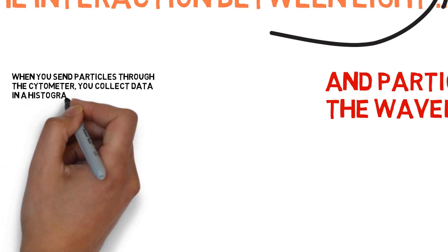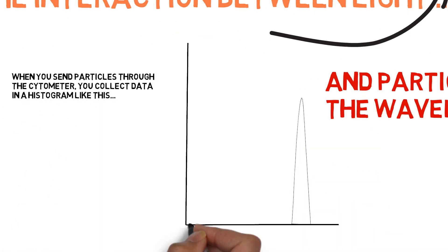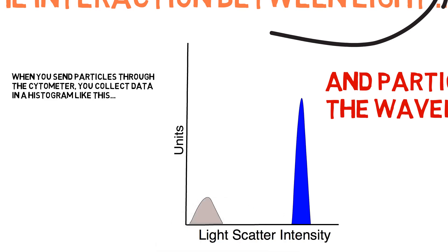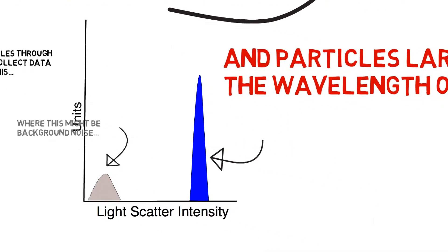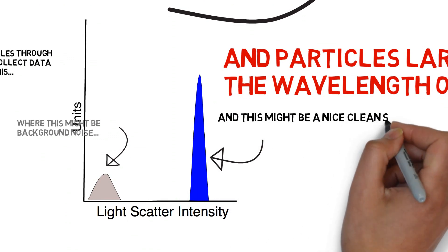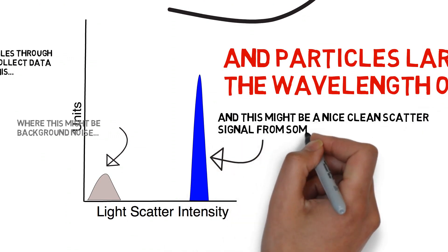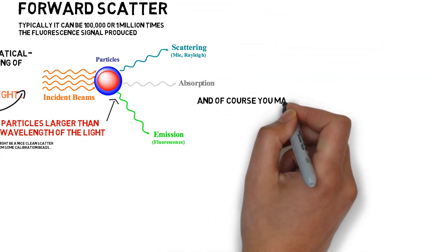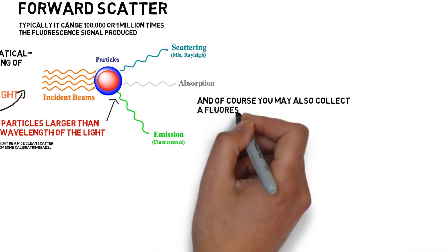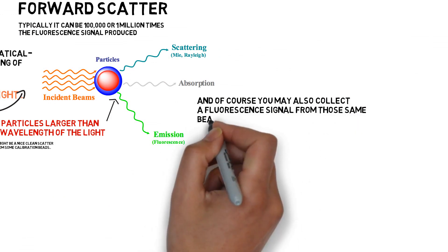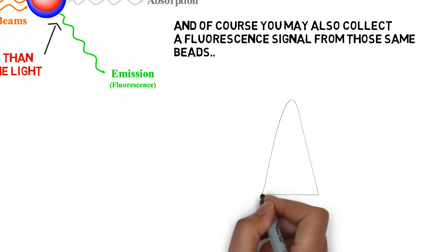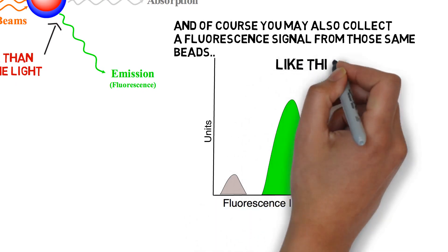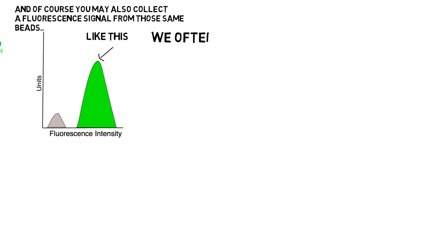When you send a particle through a flow cytometer, you collect a histogram that reflects the strength of the forward scatter signal. Noise might look like this, and a strong signal like this. This might be the sort of histogram you get when you run a single-size calibration bead. You can also collect a fluorescence signal coming from those same beads. We often use light scatter to trigger sample collection — more about that in another tutorial.